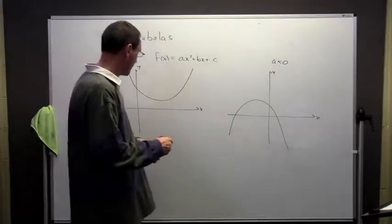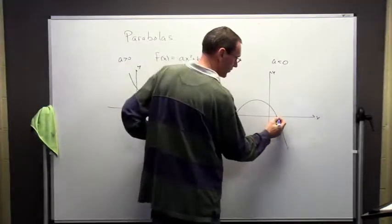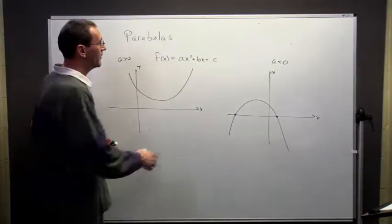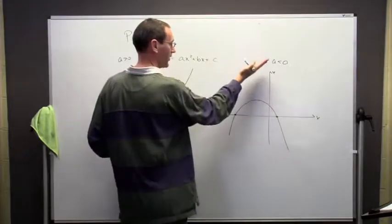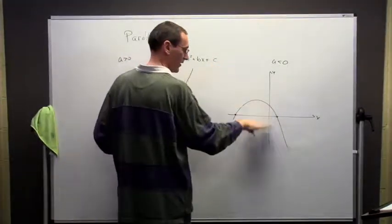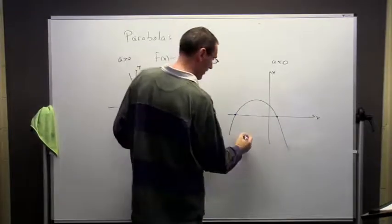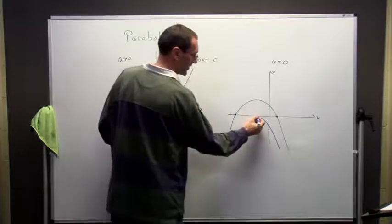Now, notice the way I drew these, in this case, notice there are two roots. If I change c, if I make c a larger number, I'm going to lift it up, or make it a smaller number, make it more negative, it's going to push it down, and there's different things that can happen. But one thing that could happen is I have one root, or no roots.